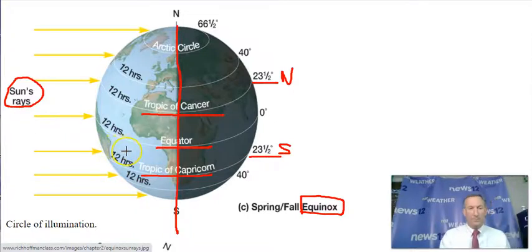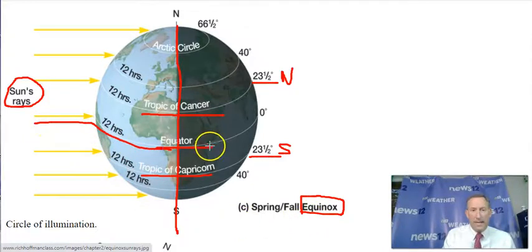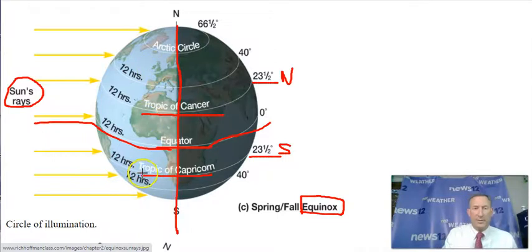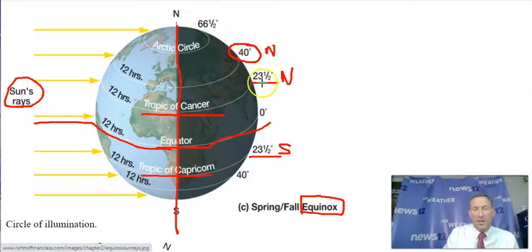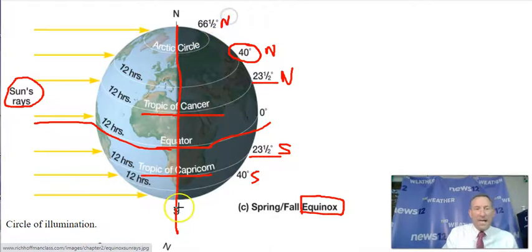During spring and fall — March and September — the sun's direct rays will hit the equator, allowing us to have 12 hours of daylight and 12 hours of darkness. So during the autumnal equinox or fall equinox, and the vernal equinox or spring equinox, the sun's direct rays hit the equator. Farmingdale is roughly at latitude 40 degrees north. You also have the Arctic Circle at 66 and a half degrees north and the Antarctic Circle at 66 and a half degrees south.